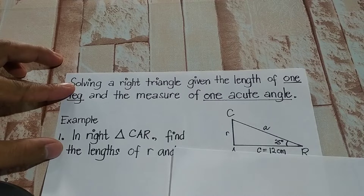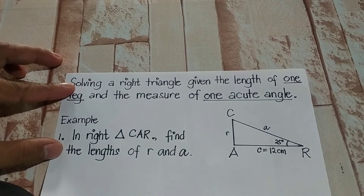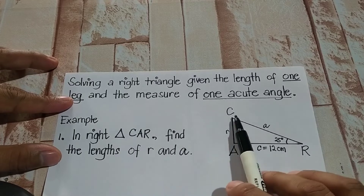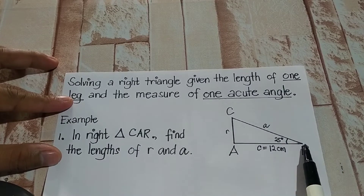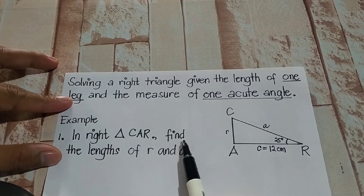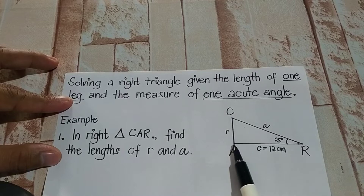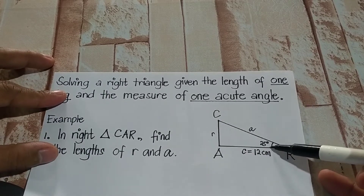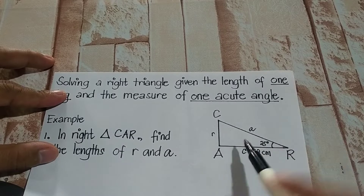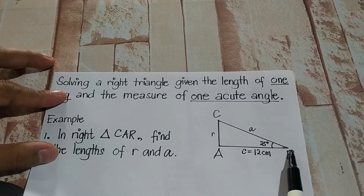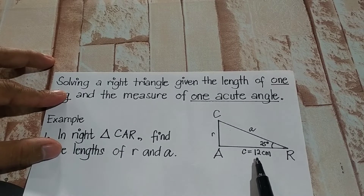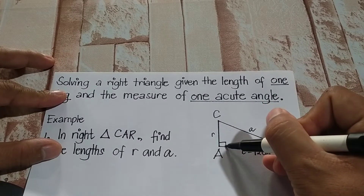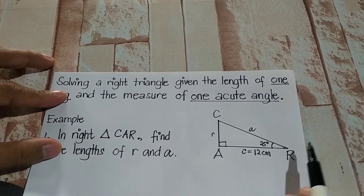So let's take for example this illustration. In a right triangle CAR — C-A-R — find the lengths of side R and side A, given that the measure of angle R is 25 degrees and side C is equal to 12 cm. Our right angle here is at angle A.